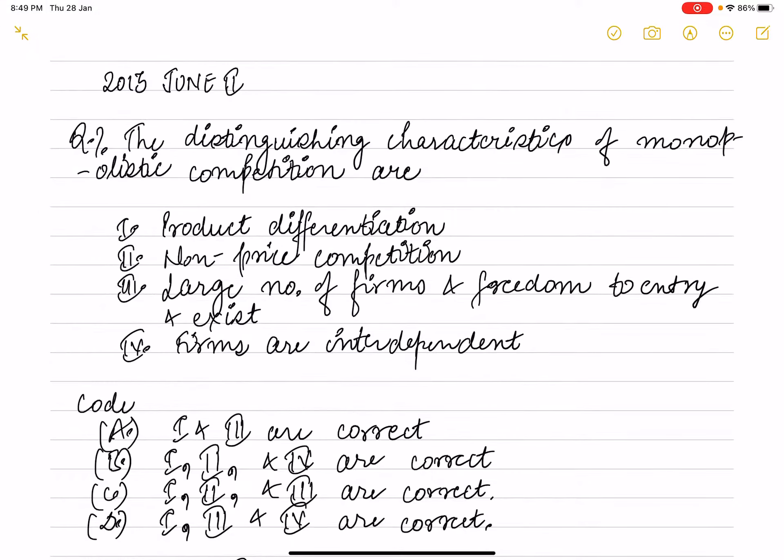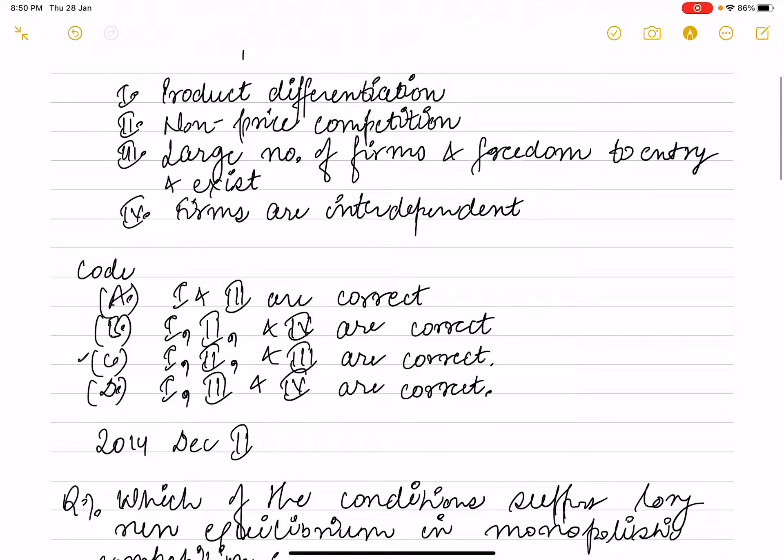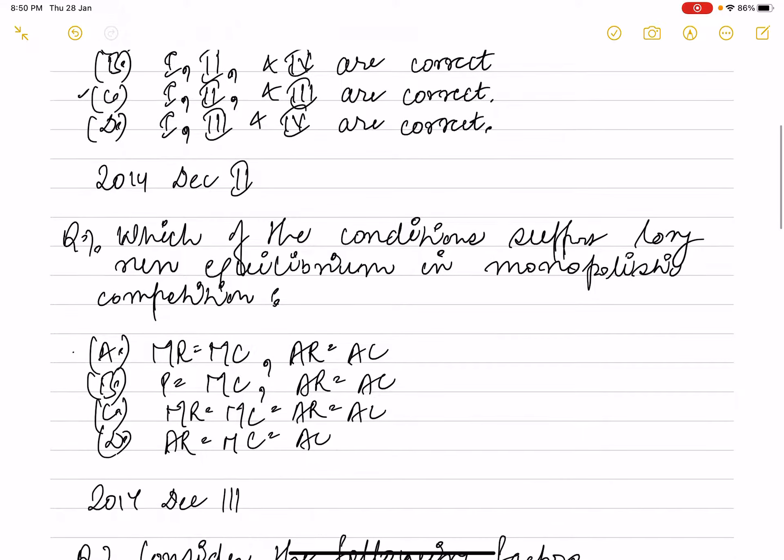This was a question asked in 2013 June paper two. The question is: the distinguishing characteristics of monopolistic competition are product differentiation, non-price competition, large number of firms and freedom to entry and exit, firms are interdependent. So interdependency is a characteristic of oligopoly, not monopolistic competition. Monopolistic competition has product differentiation, non-price competition, large number of firms and freedom of entry and exit. So accordingly first, second and third is the correct option. Option C is the correct one.